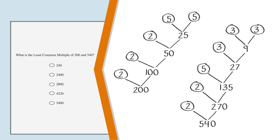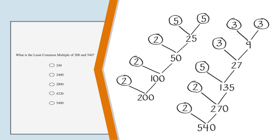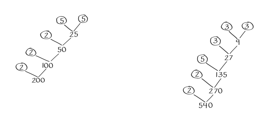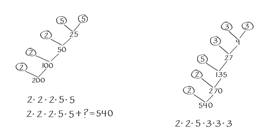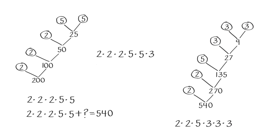To generate the least common multiple, we first identify what prime factors we need and then multiply them together. First, we need all the prime factors of 200: 2, 2, 2, 5, and 5. Now let's look at the prime factors of 540 again. What prime factors do we need to add to the list for 200 to be able to make 540? We already have enough 2s and enough 5s, but we need three 3s. So our full set of prime factors is 2, 2, 2, 5, 5, 3, 3, 3. Multiplying these together, we get the least common multiple of 200 and 540: 5,400.